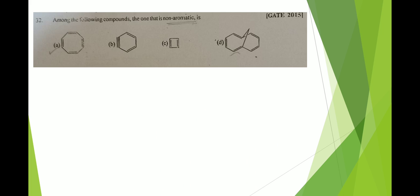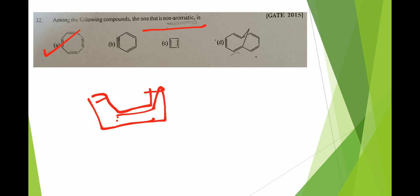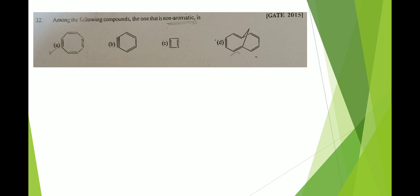The last question asks which compound is non-aromatic. Cyclooctatetraene has a tub-like structure, creating a restriction for delocalization of pi electrons. Because of this tub shape, delocalization of the double bond is restricted, making it non-aromatic. Therefore option A is correct. Thank you so much for watching. For NET, SET, and GATE syllabus, study material, and test series, please follow Global Online University. Please like, share, and subscribe.